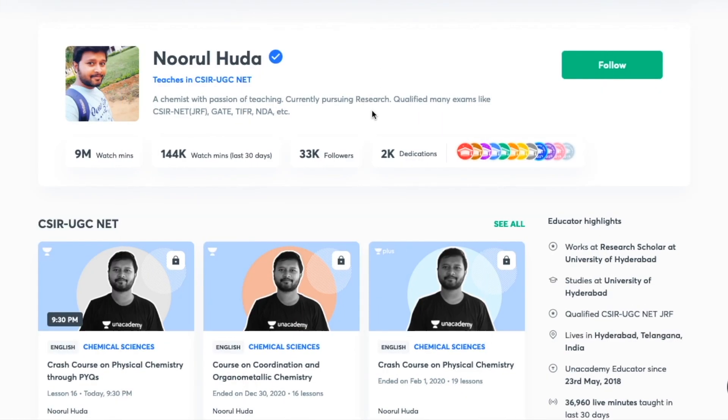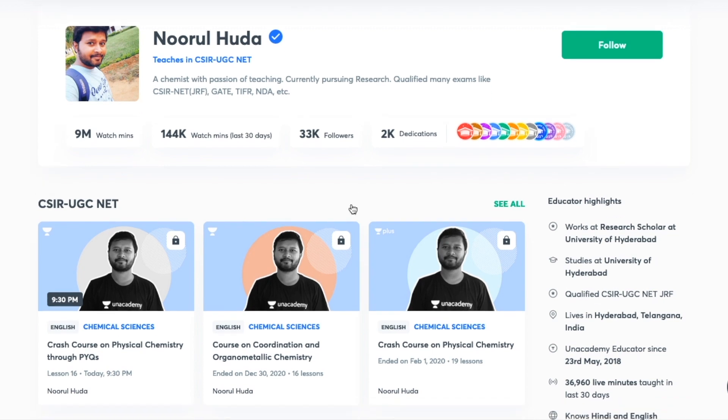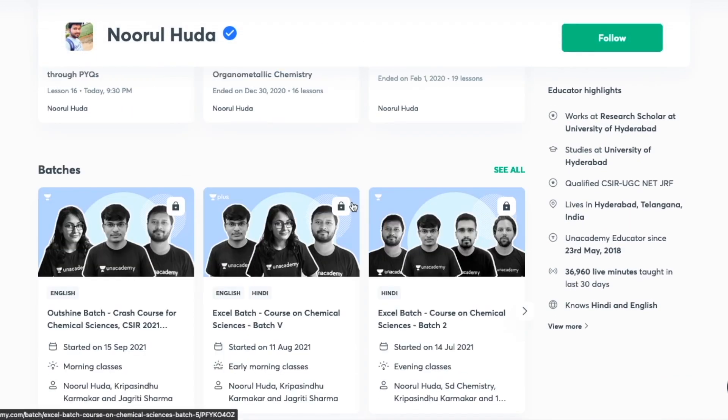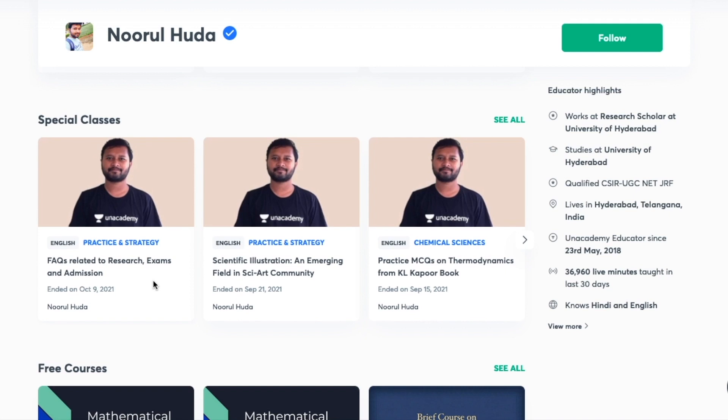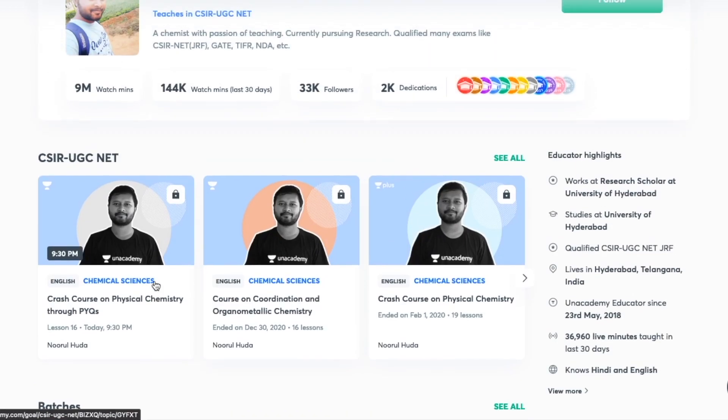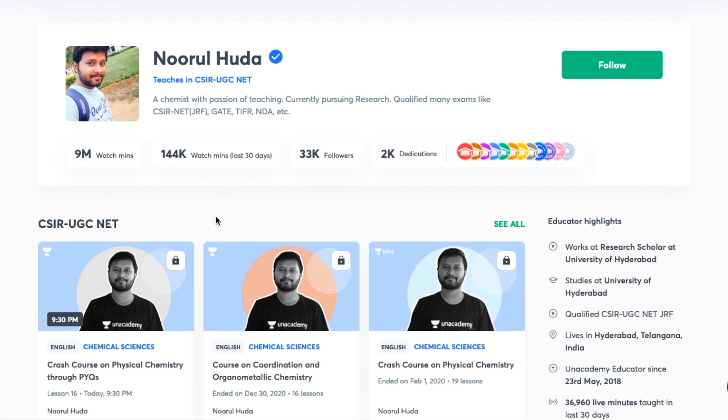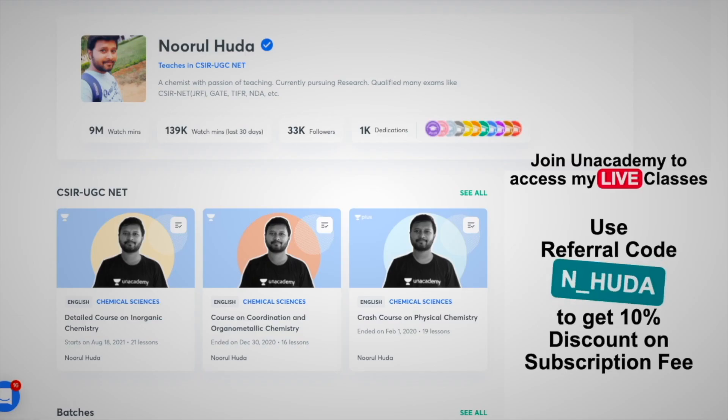So I teach live on Unacademy Plus platform. Here I teach for the CSIR UGC NET category and you can follow me over here for regular classes. You can access my free classes as well as my paid classes on this particular platform. The classes which are free you can get that under the section of special classes, whereas in order to access my paid classes, paid live classes, you have to take Unacademy Plus subscription. So do make sure that you take the Unacademy Plus subscription to access all my paid classes which are quite organized. The whole syllabus is being completed over there and the classes are quite regular over there. Make sure that you take Unacademy Plus subscription by using my referral code that is N underscore Huda. That's it for this. Thank you so much.